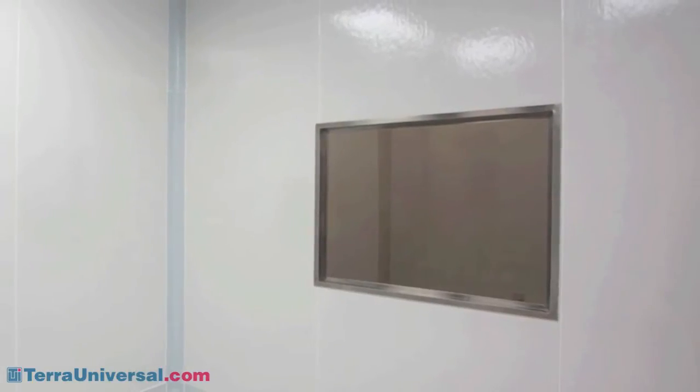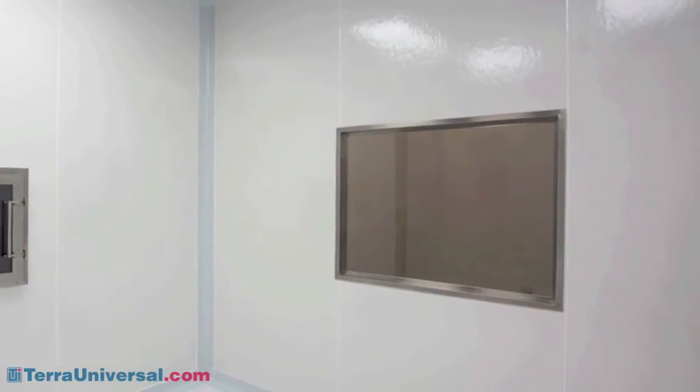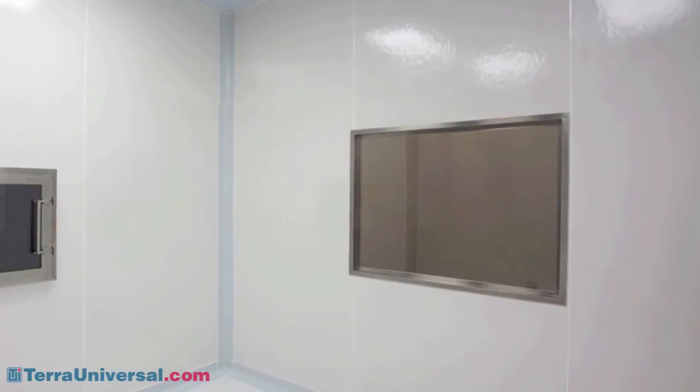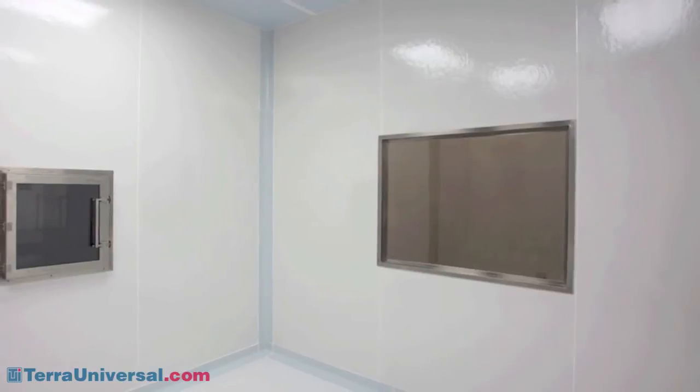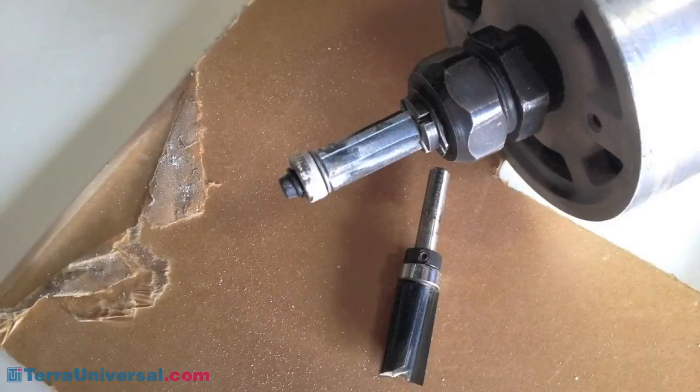Third, any wall obstructions including windows, air vents, and outlets should be installed in wallboard cutouts before the FRP panels are applied. Use a router to make these cutouts in the FRP panels.